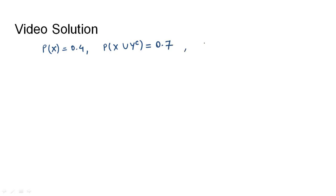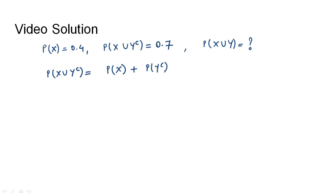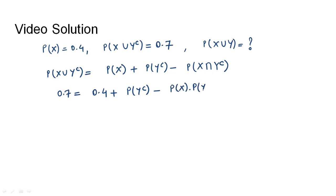P(X) = 0.4 and P(X∪Y complement) = 0.7; we need to find P(X∪Y). Applying the addition rule: P(X∪Y^c) = P(X) + P(Y^c) - P(X∩Y^c). Since X and Y are independent, P(X∩Y^c) = P(X)·P(Y^c). So: 0.7 = 0.4 + P(Y^c) - P(X)·P(Y^c), which gives 0.3 = P(Y^c) · (1 - P(X)).